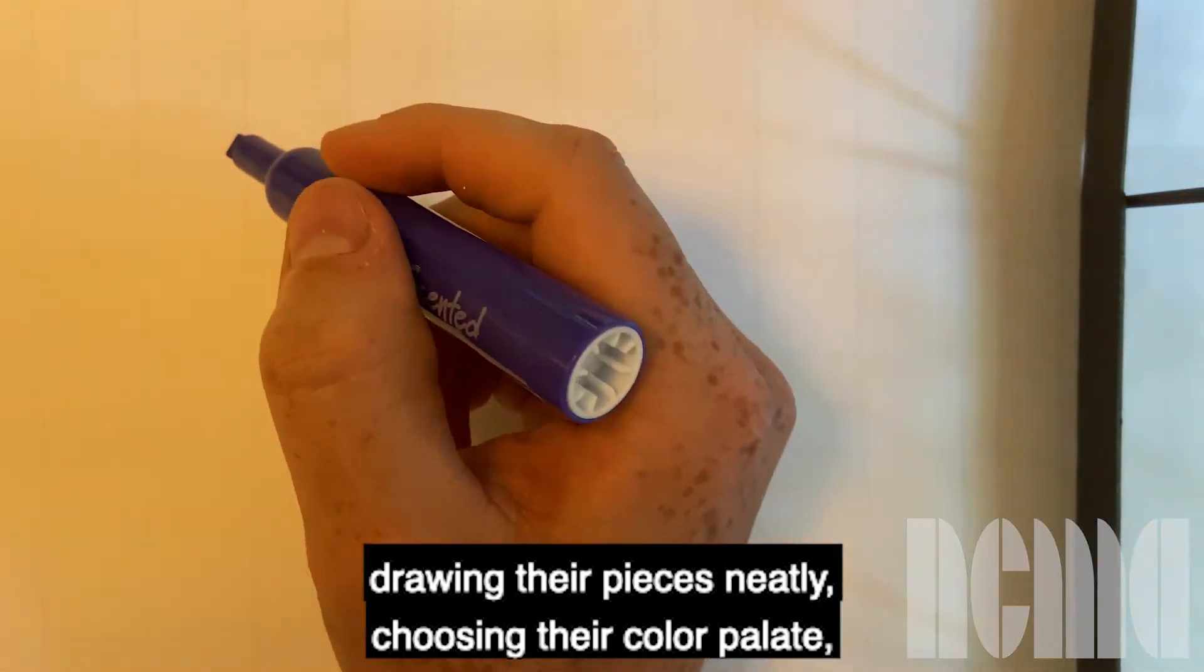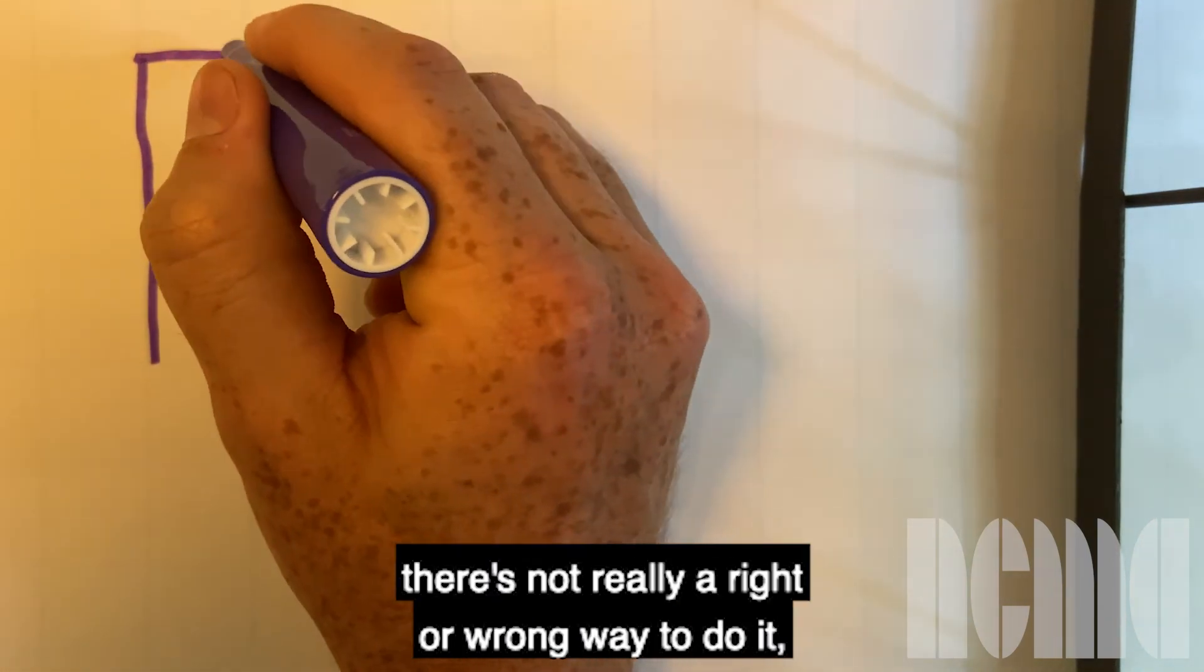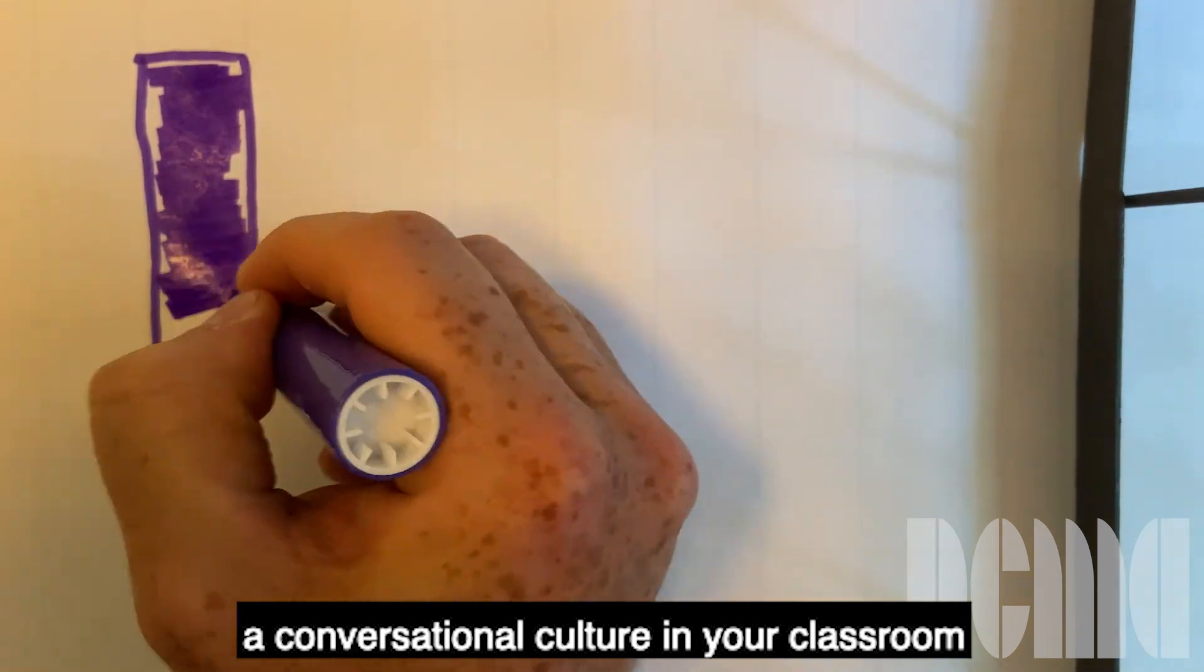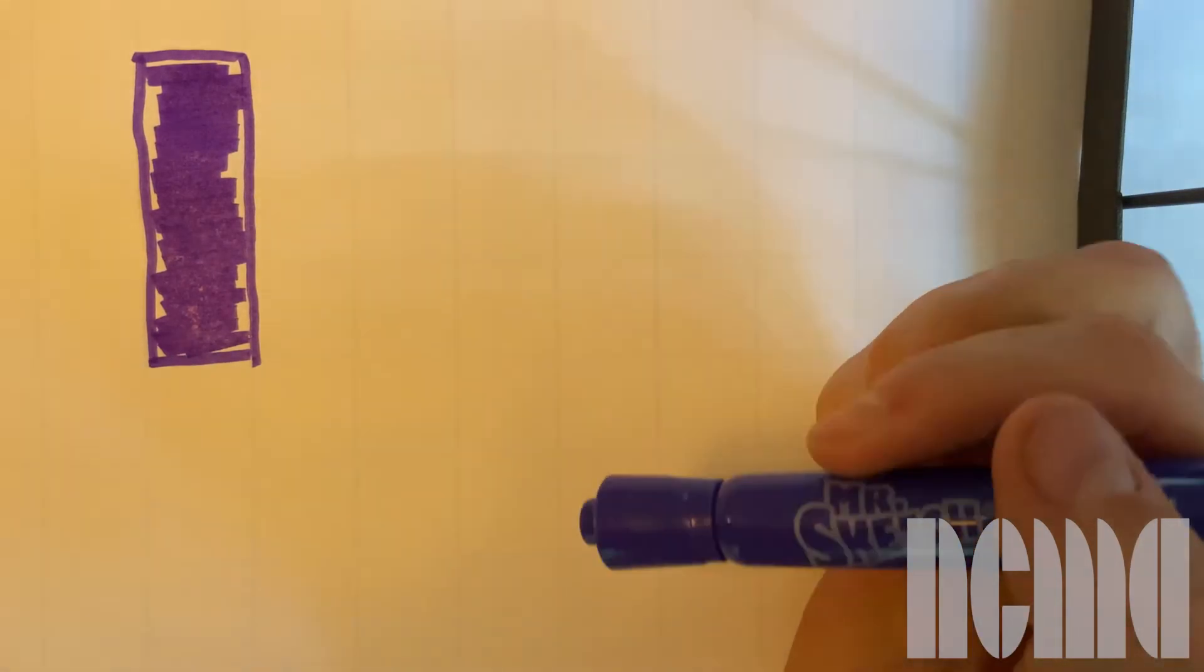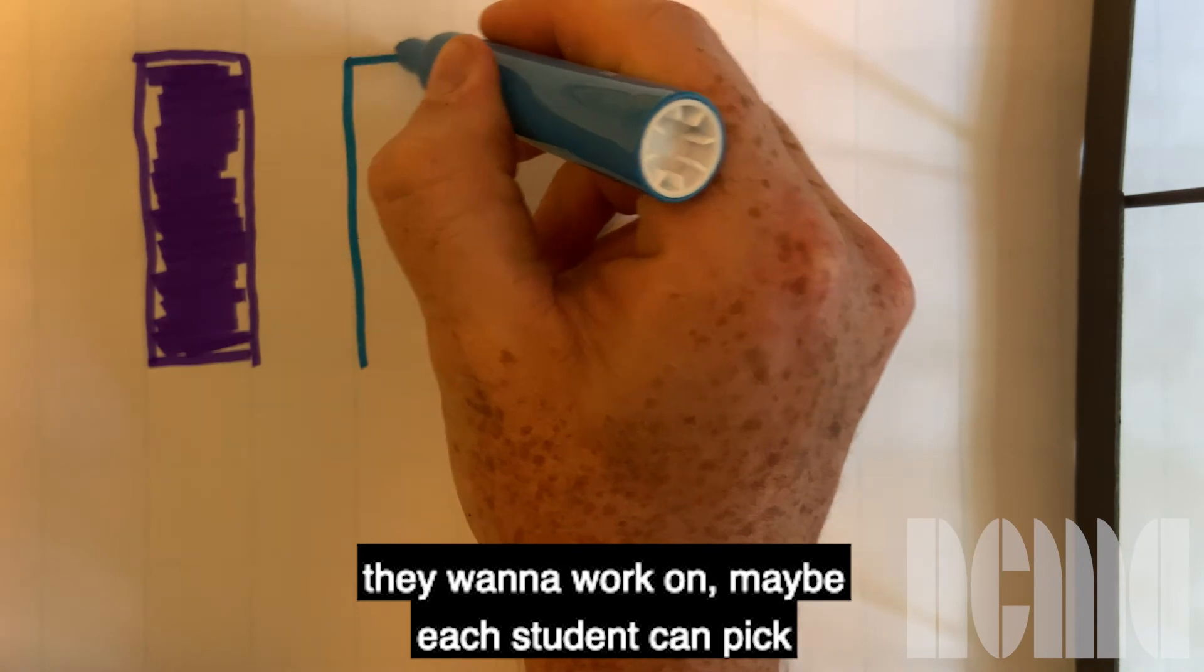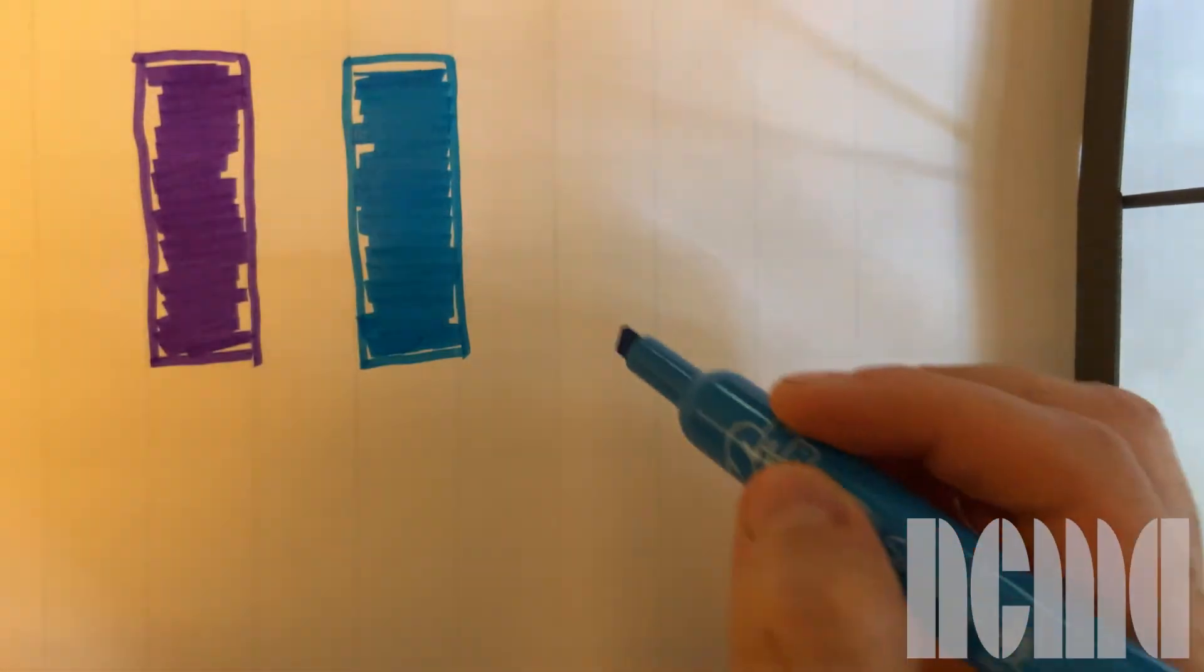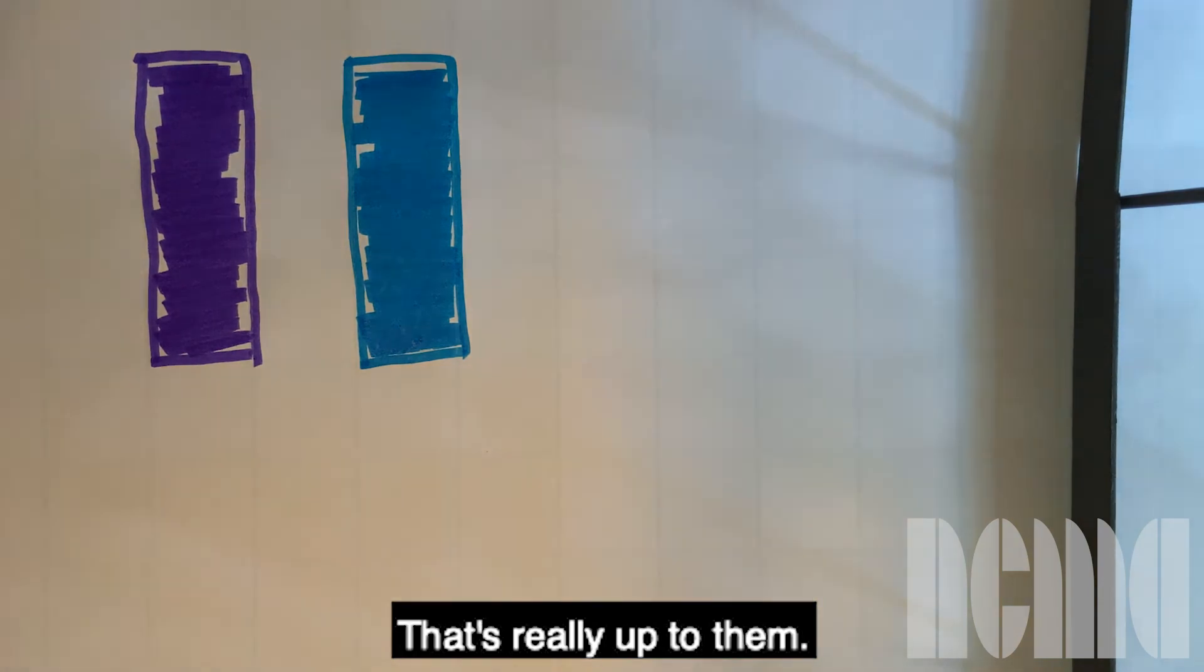And again for choosing the color palette there's not really a right or wrong way to do it. This is something if you've established a conversational culture in your classroom where students are used to collaborating and used to sharing their ideas they can simply decide what color palette they want to work on. Maybe each student can pick a color or maybe they can all agree on a certain set of colors together. That's really up to them.